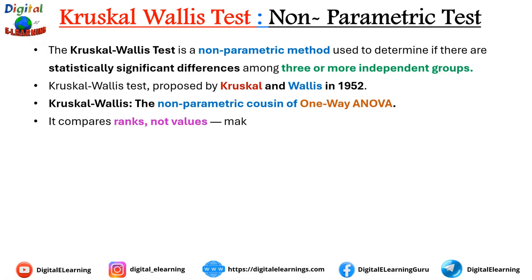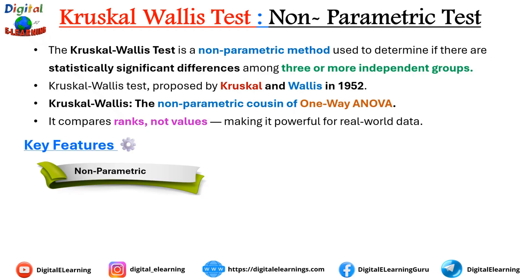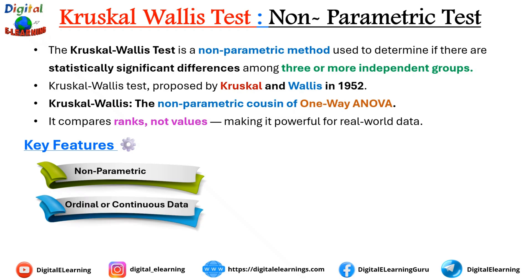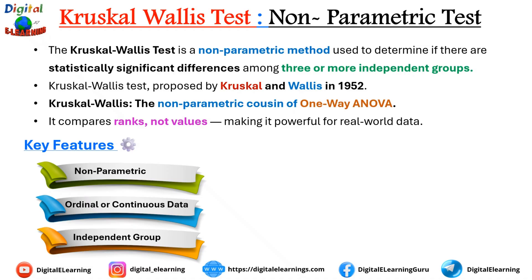In this test we don't compare values directly — we compare their ranks, which makes it powerful and flexible for real-world data. Key features include: it is non-parametric with no need to assume a normal distribution; it works with ordinal or continuous data converted into ranks; and each group's observations must be independent of one another.